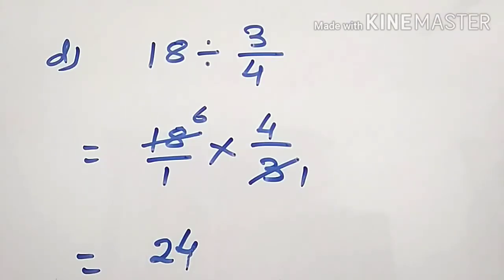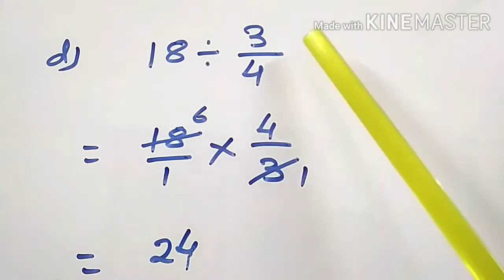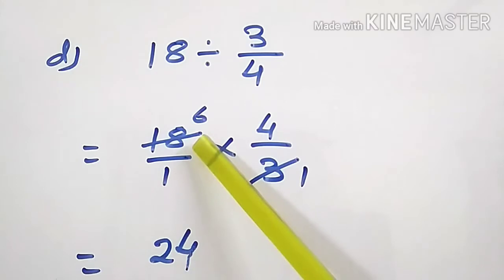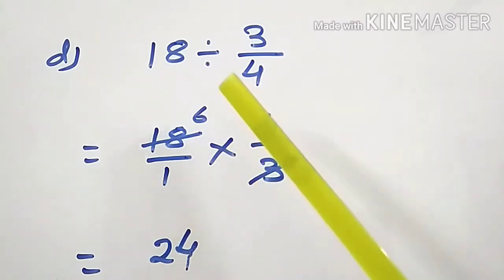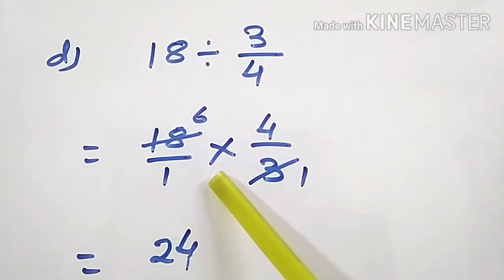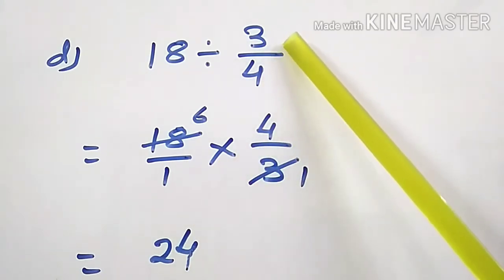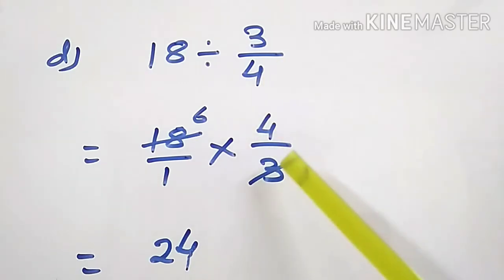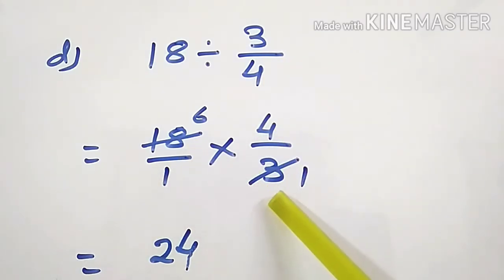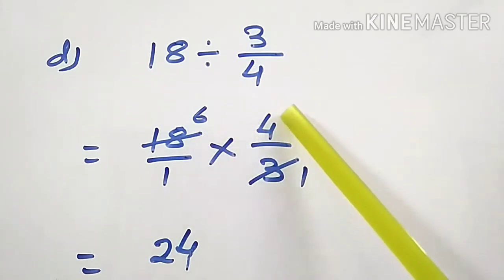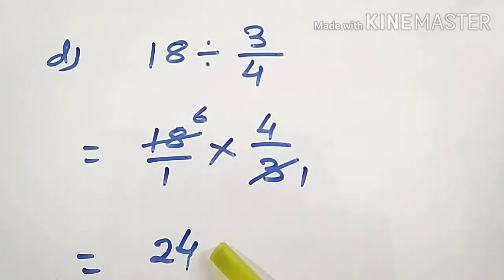Question D: 18 divided by 3/4. Nothing is in the denominator of 18, so we can write 18/1. Then change the sign of division into multiplication and take reciprocal of fraction 3/4, which is 4/3. 18 is a multiple of 3, so divide 18 by 3: 3 sixes are 18. 6 into 4 is 24. So 24 is the quotient.